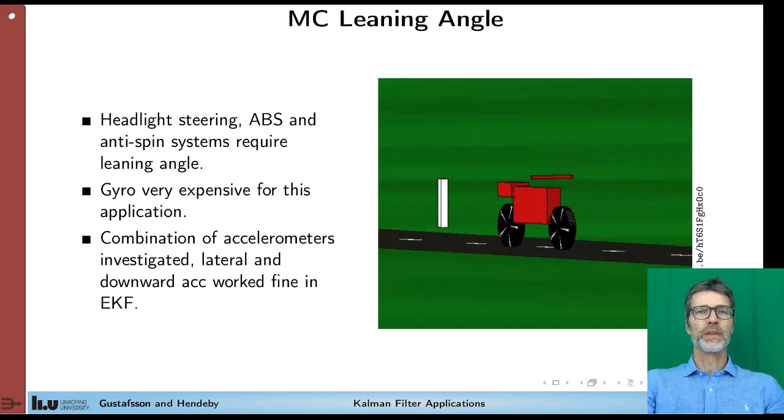Let's proceed to the next application. It's about estimating the leaning angle of a motorcycle. Why do you need the leaning angle? One application is to steer the headlight so it always points down on the road in front of you, not out in the forest. Another one is for supporting the ABS and anti-spin systems. Because if the motorcycle is leaning, the traction forces cannot be that large, and you have to be more conservative in your control actions.